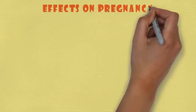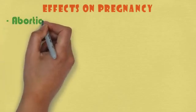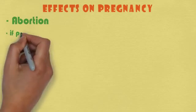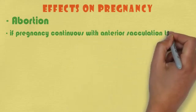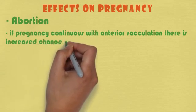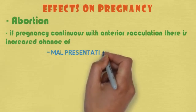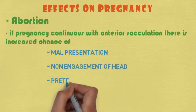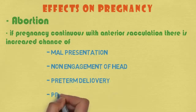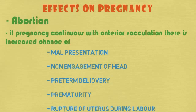Next are the effects on pregnancy. First, it can cause abortion. Second, if the pregnancy continues with anterior sacculation, there is an increased chance of many complications such as malpresentation — meaning breech or any other abnormal presentation — no engagement of the head, preterm delivery, and rupture of the uterus during labor. A lot of complications can occur if the pregnancy continues with anterior sacculation.